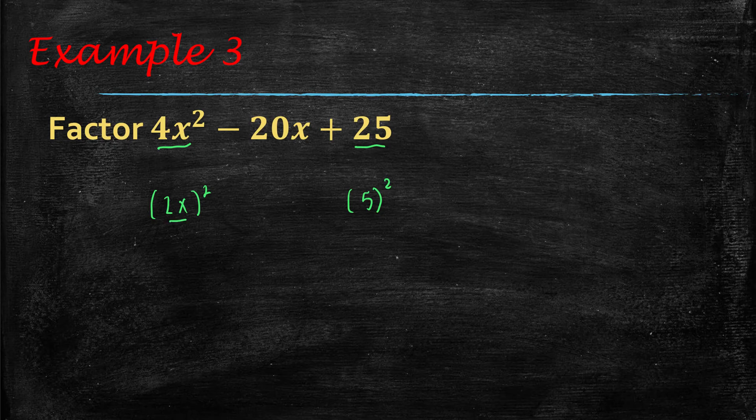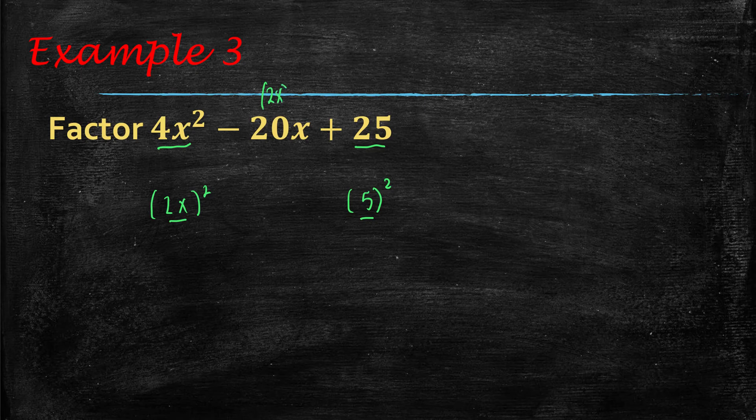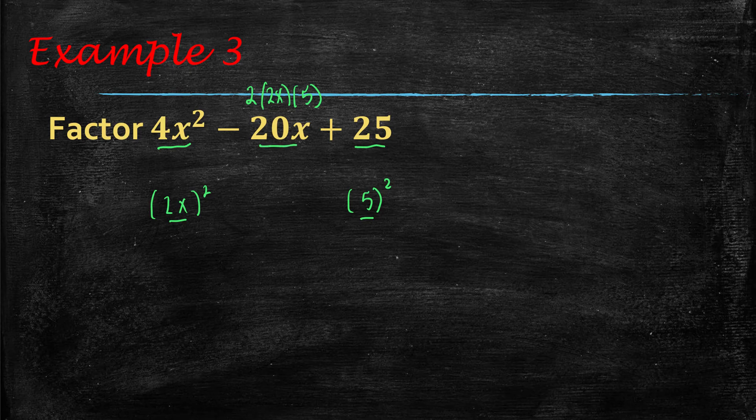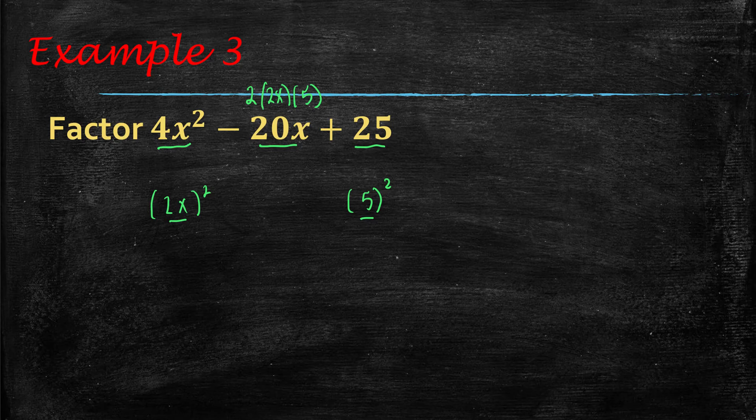Now, can I multiply these together? So 2x times 5, and double it, and does that equal this? Well, 2x times 5 would be 10x, and 10x times 2 is 20x, so yes, it does check.